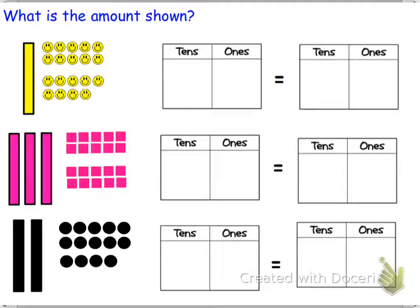Hi guys, Ms. Perkins here. Today we're going to be talking about Module 4 of Lesson 23. In this lesson we're going to be talking about being able to interpret two-digit numbers as tens and ones, and sometimes there are going to be more than nine ones.